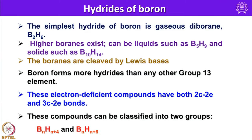The boranes are essentially cleaved by Lewis bases because they have electron-deficient BHB bridging bonds, so one can expect them to readily cleave in presence of stronger Lewis bases. Boron forms more hydrides than any other group 13 element. Perhaps after carbon, boron is the second element among p-block elements to form the largest number of hydrides.